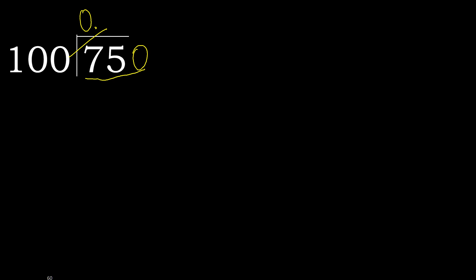100 multiplied by which number is nearest to 750 but not greater? 100 multiplied by 8 is 800 — that is greater. Multiplied by 7 is 700 — that is not greater.